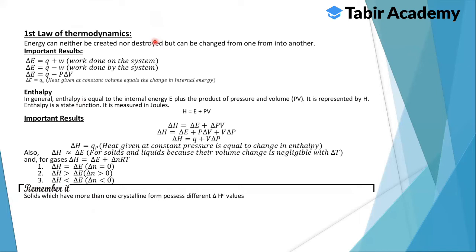The first law of thermodynamics states that energy can neither be created nor destroyed, but it can change from one form to another — for example, kinetic energy to potential energy, or to sound energy. An important result is: delta E = q + w, where w is work done on the system, or delta E = q - w for work done by the system, which gives delta E = q - p·delta·V.